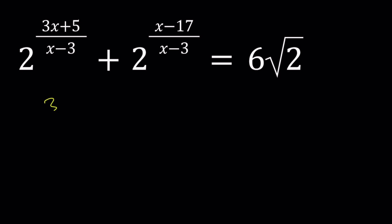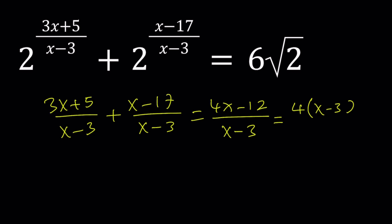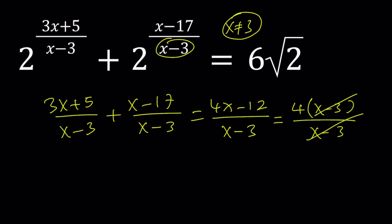If you take the first exponent and add it to the second one — I'm just talking about exponents here — you're going to notice the following: 3x plus x is 4x; 5 minus 17 is negative 12. So we get (4x-12)/(x-3). And 4x-12 is factorable as 4 times (x-3). As long as x does not equal 3 — which it can't since it's in the denominator — we can cancel, and we end up with 4. So the exponents add up to 4, which is an integer.